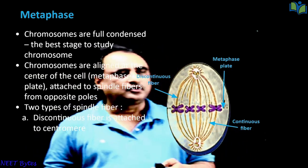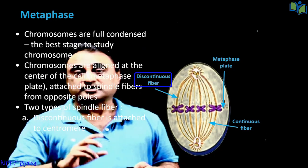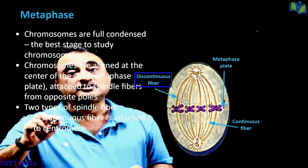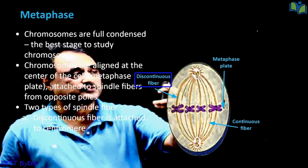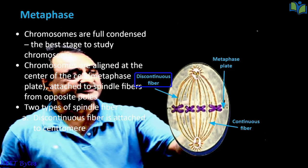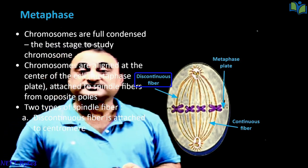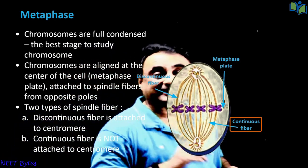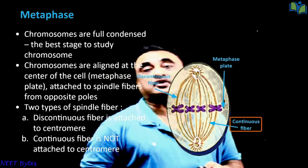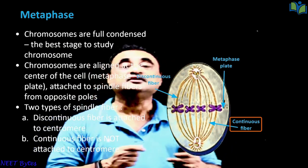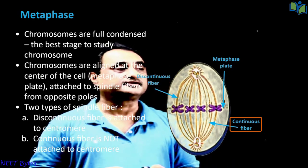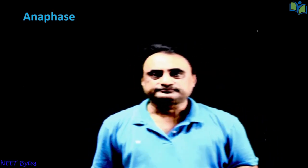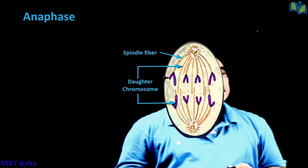In metaphase we can clearly see two types of spindle fibers. The first is the discontinuous fiber, which is attached to the centromere — you can see this in the diagram. The second is the continuous fiber, which is not attached to the centromere. So we have two types: continuous fiber and discontinuous fiber.